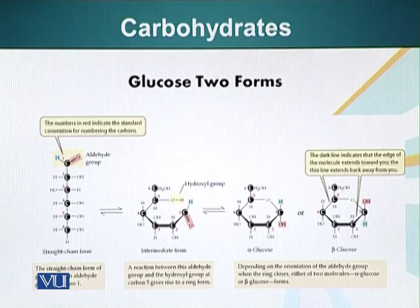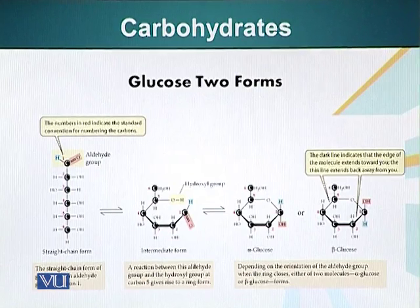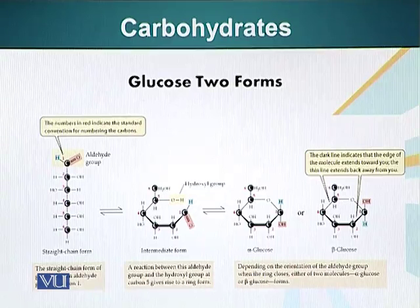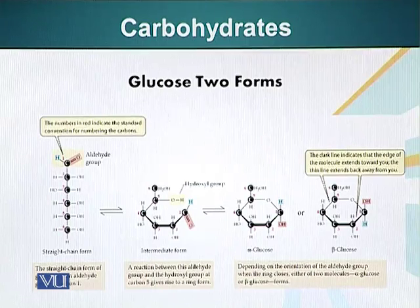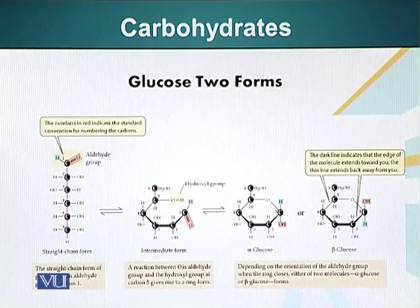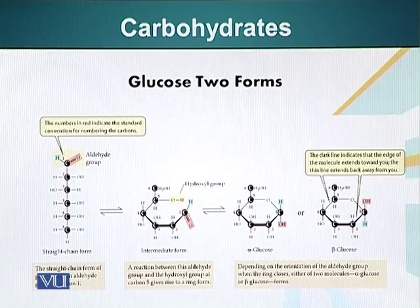Glucose, for example, can exist in two forms: a linear form and a circular form. When a glucose molecule circularizes, it has two choices — it can adopt an alpha configuration or a beta configuration, depending upon the orientation of the aldehyde group when the ring closes. In alpha glucose, the hydroxyl group is pointing downwards, whereas in beta glucose, the hydroxyl group is pointing upwards. The consequence of this chemistry is very significant, which will become clear in subsequent modules.